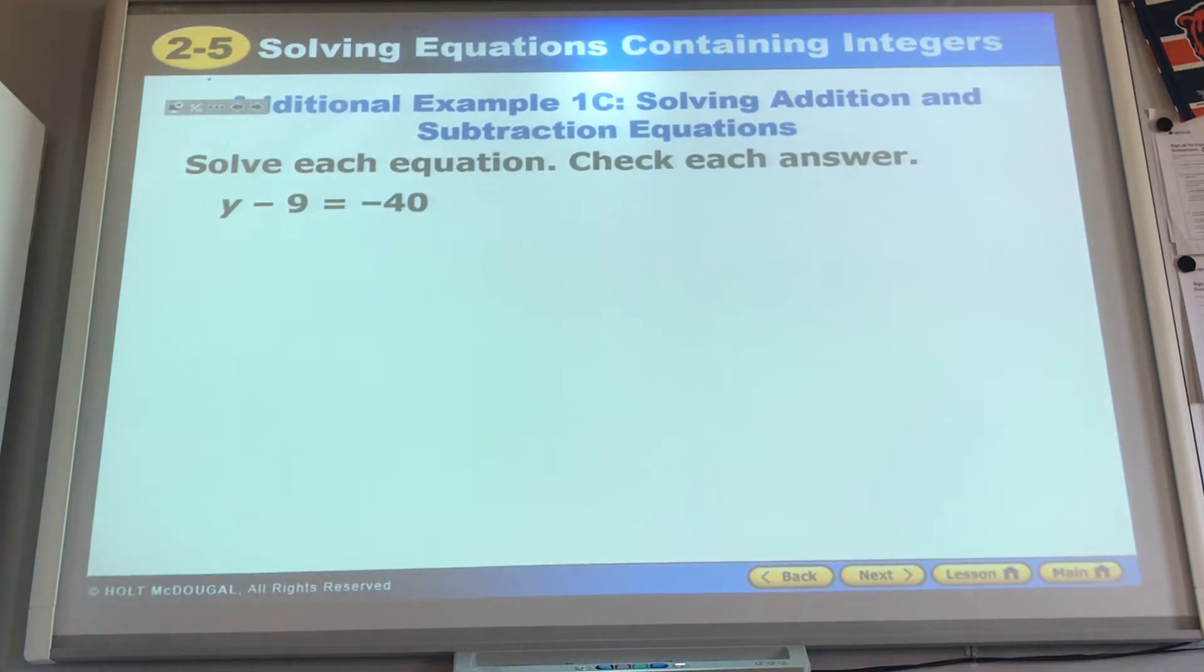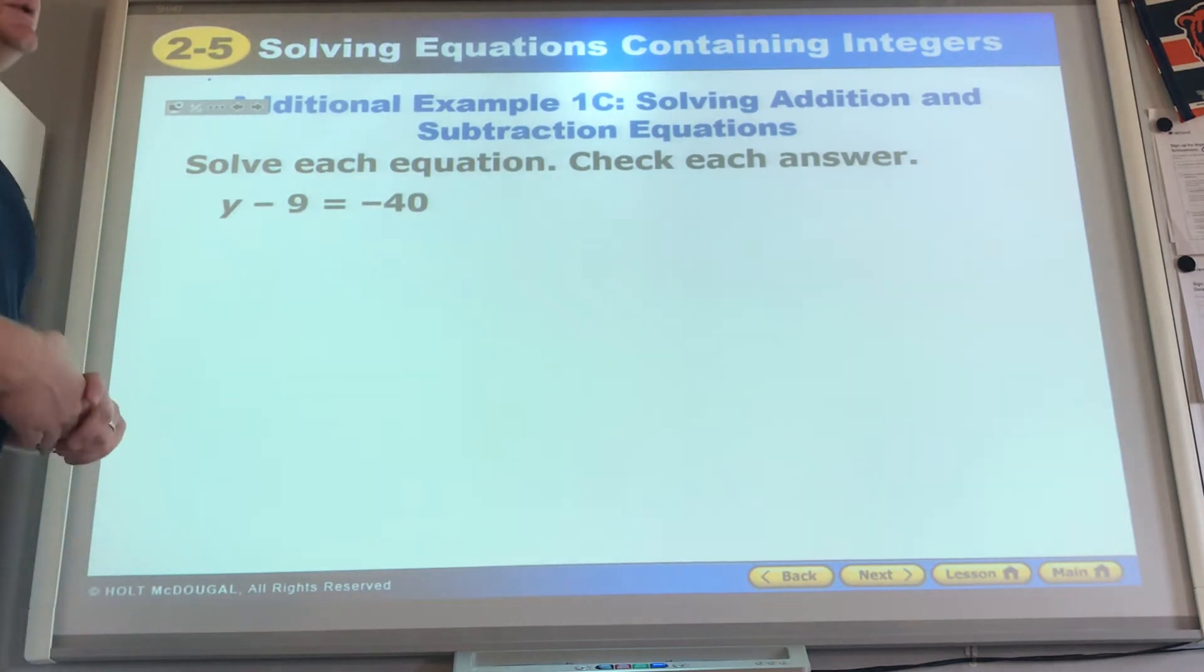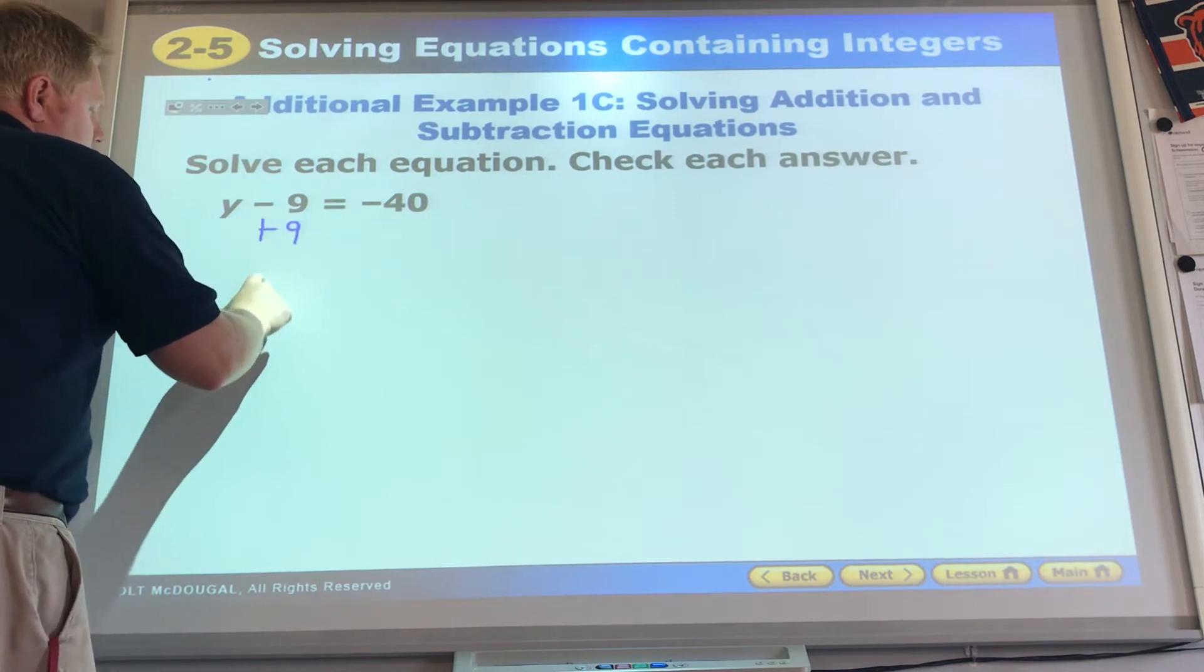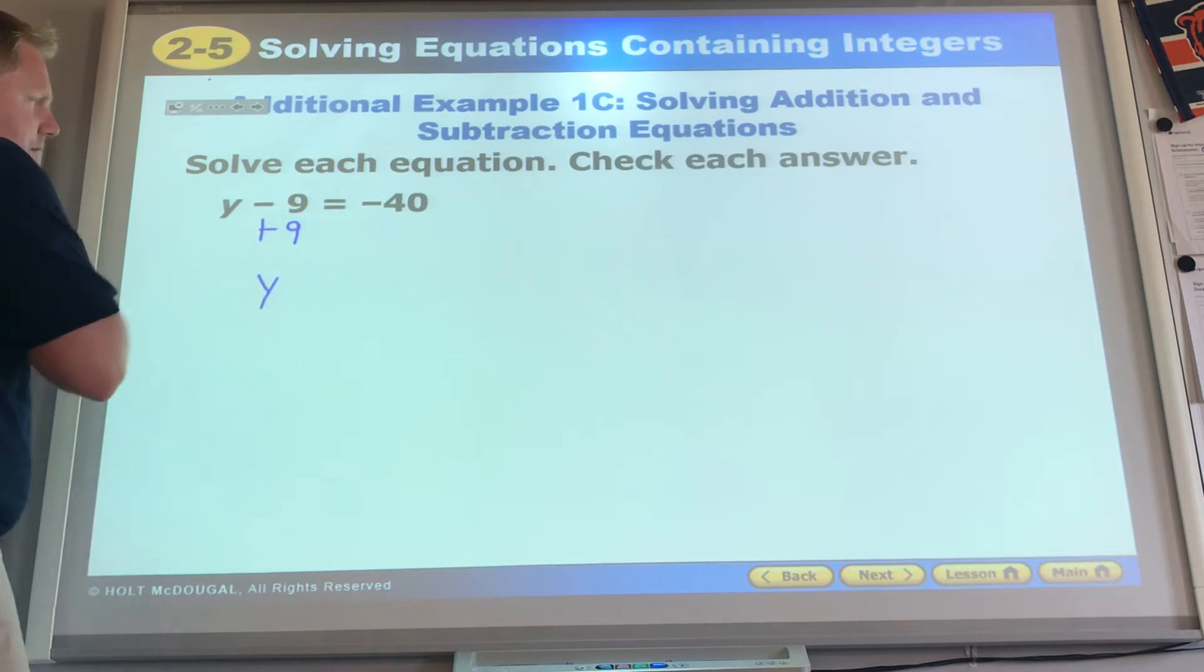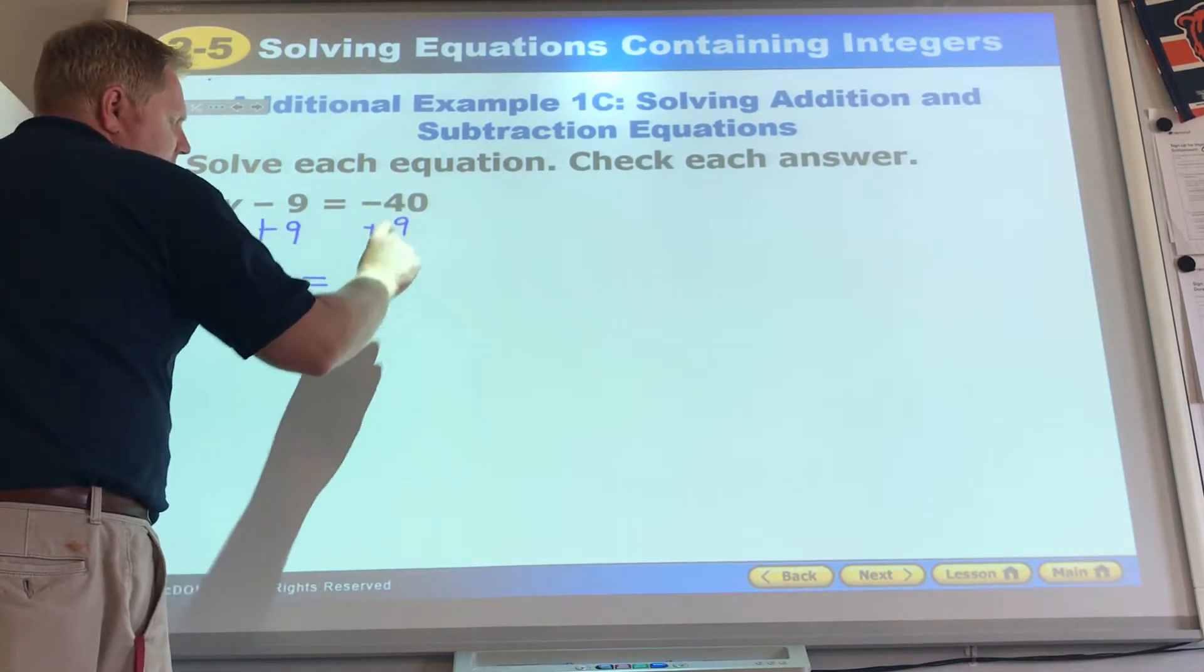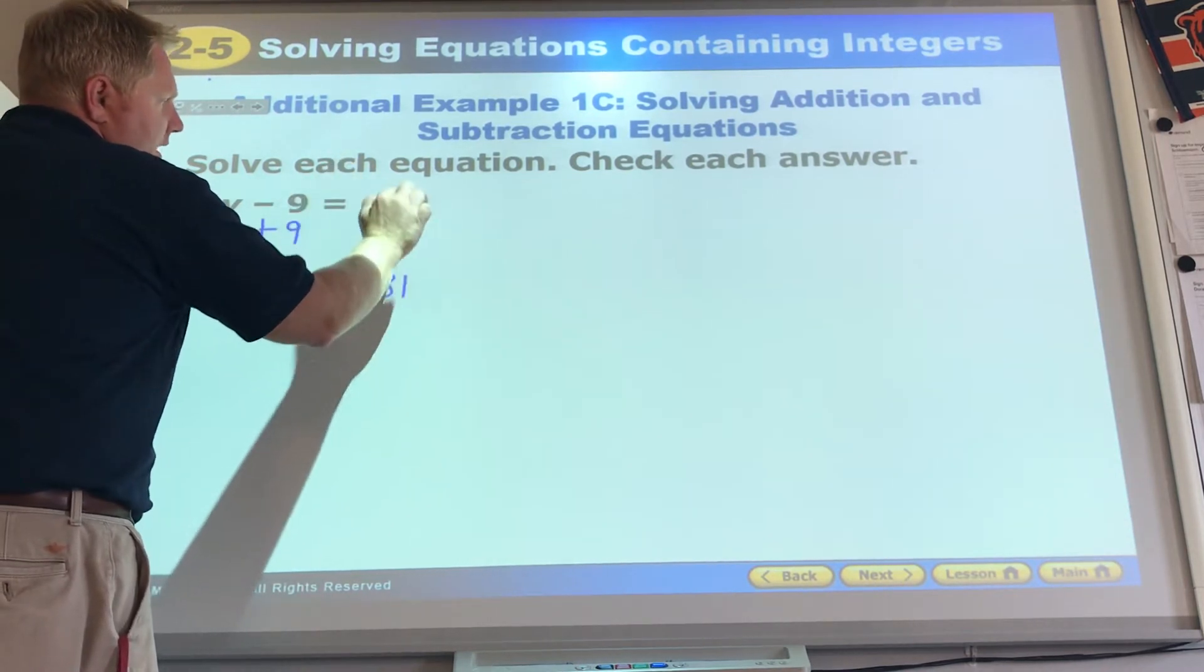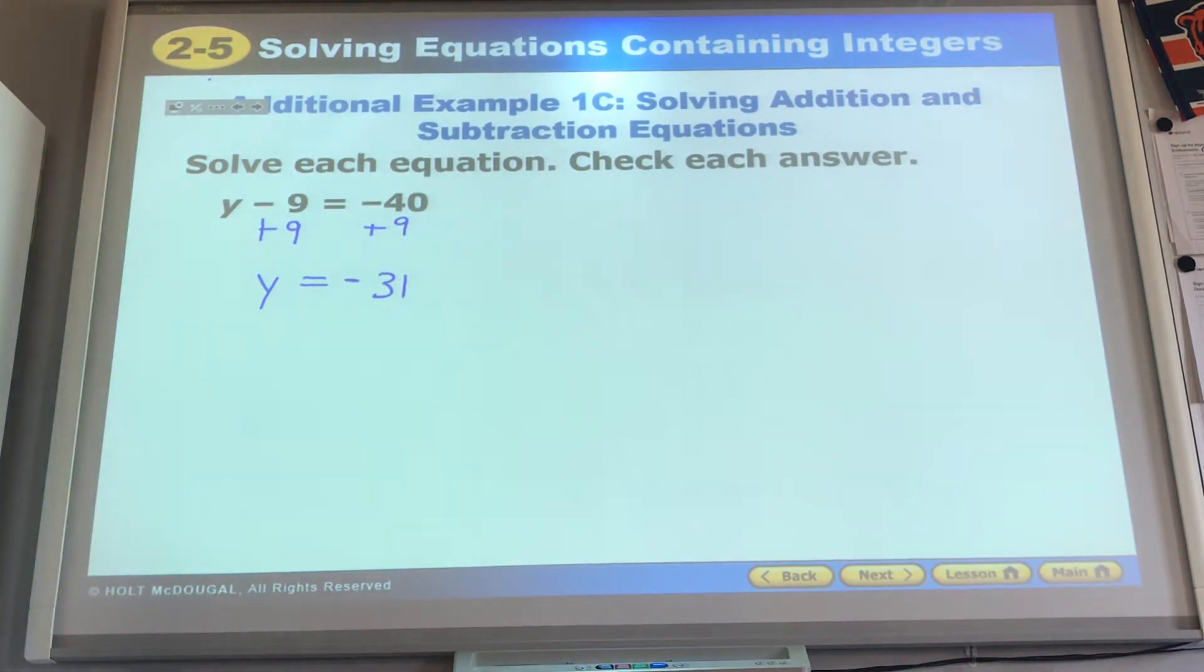Y minus 9 equals negative 40. They're subtracting 9. The operation we'll use then is addition. That gets y by itself. They're different, so you subtract and keep the sign of the bigger. They're the same, so it's 0. If we add 9 over here, subtract. 40 minus 9 is 31. Signs were different, so we subtracted. Keep the sign of the bigger number. 40 is bigger than 9, so it's a negative 31.